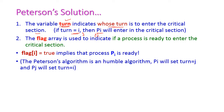The second variable is the flag array, which is used to indicate if a process is ready to enter the critical section or not. Because this is a boolean variable, it accepts only two values — either true or false. If flag[i] equals true, it implies that process i is ready to enter the critical section.